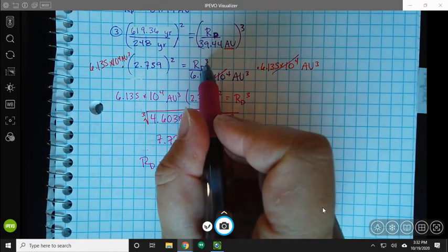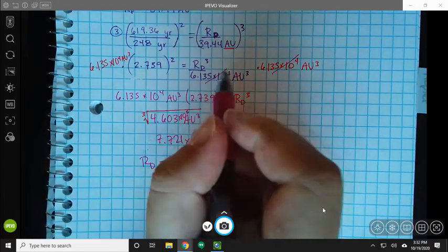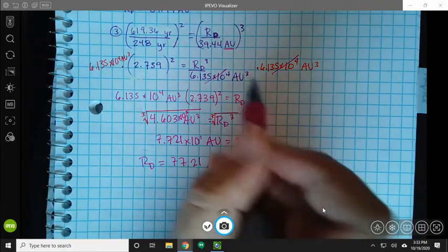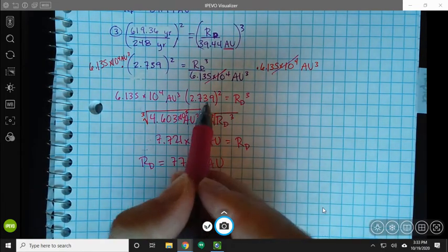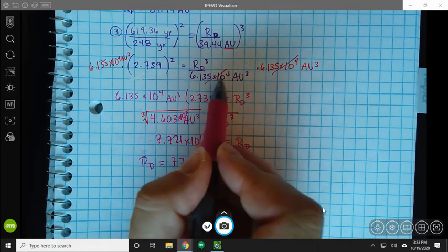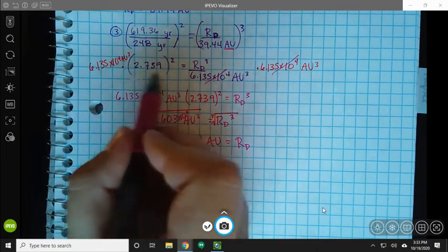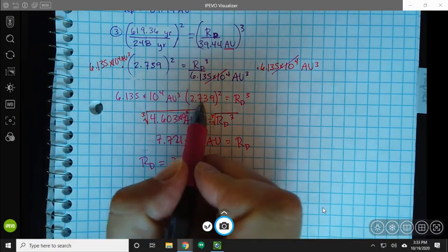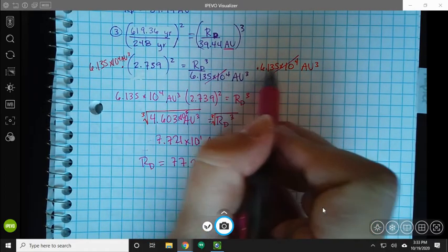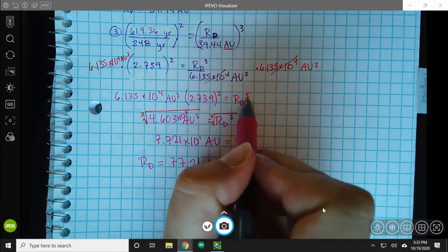So I want to get this RD cubed by itself. If I'm dividing by this number, if I multiply it on this side and on this side, then I can cancel it out over here. So it's gone from this side of the equation and moved over to the other side. So RD cubed now is equal to 6.135 times 10 to the 4th AU cubed. That was this number down here that we've multiplied on one side and then did the same to the other side of the equation times this term that's still here that we haven't messed with yet. 2.739 squared. And since this was on the bottom and I multiplied by it, so we're dividing by it here, multiplying by it here, those cancel out. So we end up just with RD cubed.